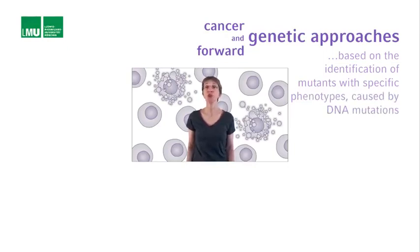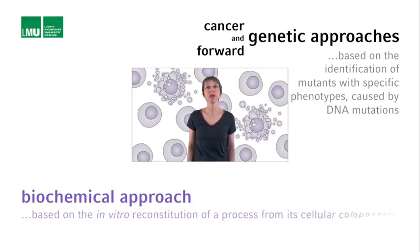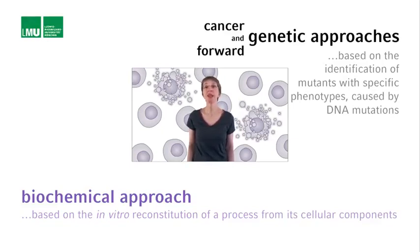Using this approach, genes can be identified in an unbiased manner that are involved in a particular process of interest, such as apoptosis. A biochemical approach is an equally powerful, unbiased tool for gene discovery. However, it is based on the reconstitution in a test tube, or in vitro, of a process of interest from cellular components. Once such a process can be reconstituted in vitro, the minimal set of cellular components can be identified that are sufficient for this process.